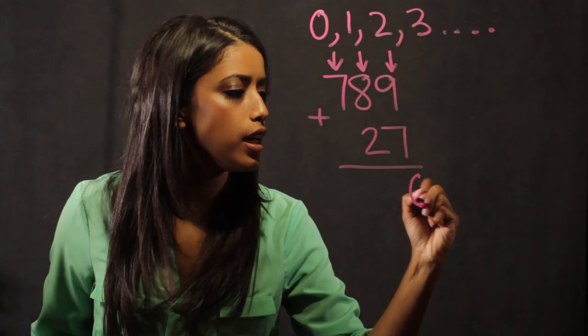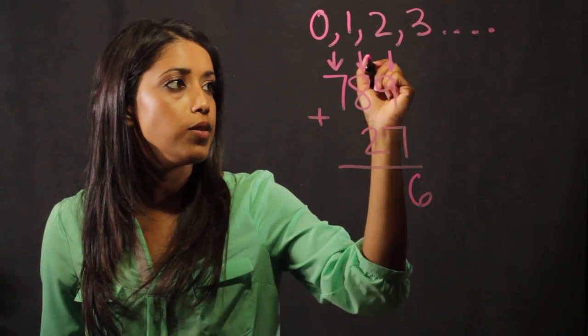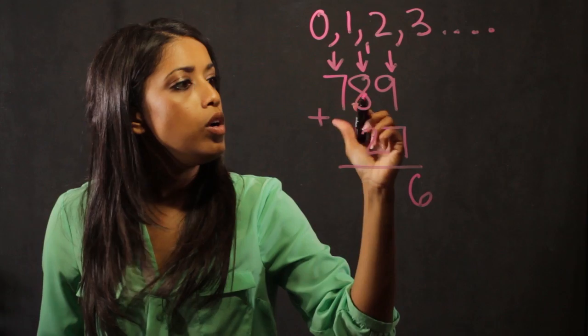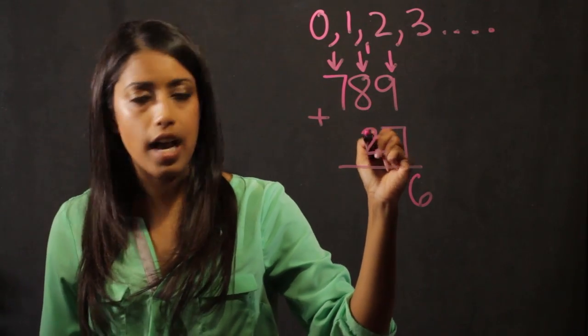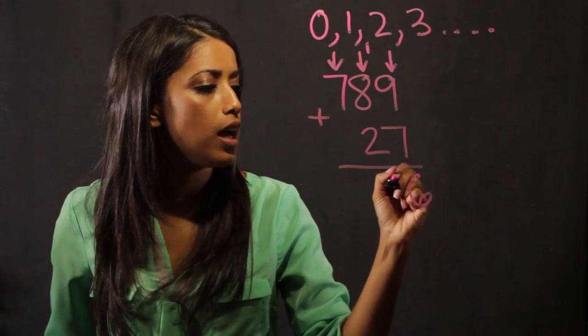So 9 plus 7 gives us 16 and we carry a unit of 10 up here. So we have 8 plus 2, which is 10. We add this extra 10 unit, which gives us 11.